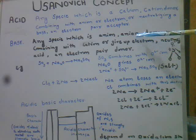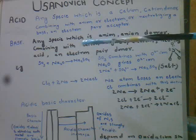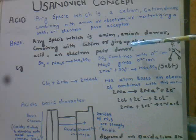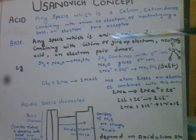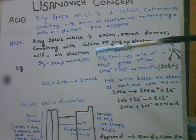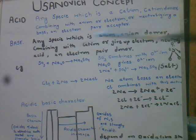...jo oxide ion donate kare, anion donate kare, combining with cation — jisme ability ho apni electrons share karne ki — woh cation ke saath bond banaye. Jo atom electrons deta hai, woh bhi Base hai. Jab acid ko neutralize kare — base ke saath react karke salt aur water banaye — to use hum Base kehte hain. Electron pair donor ko Base kehte hain.